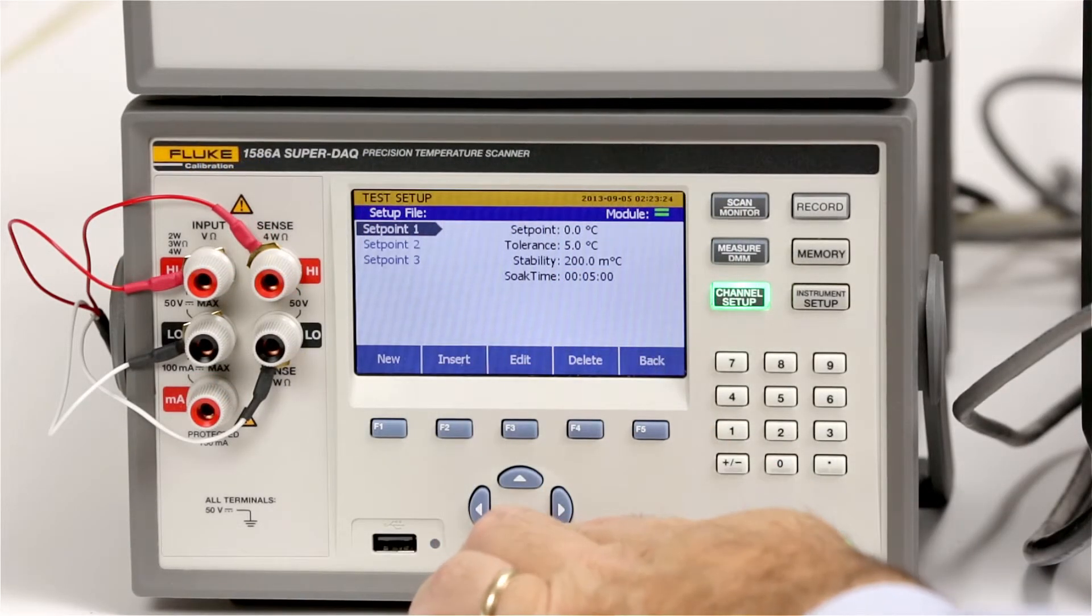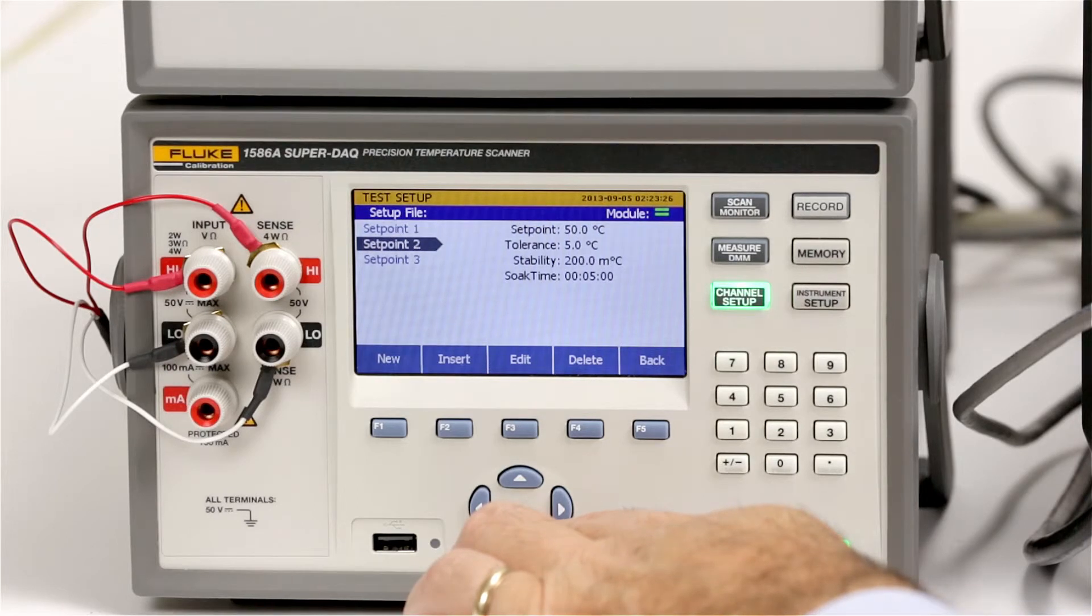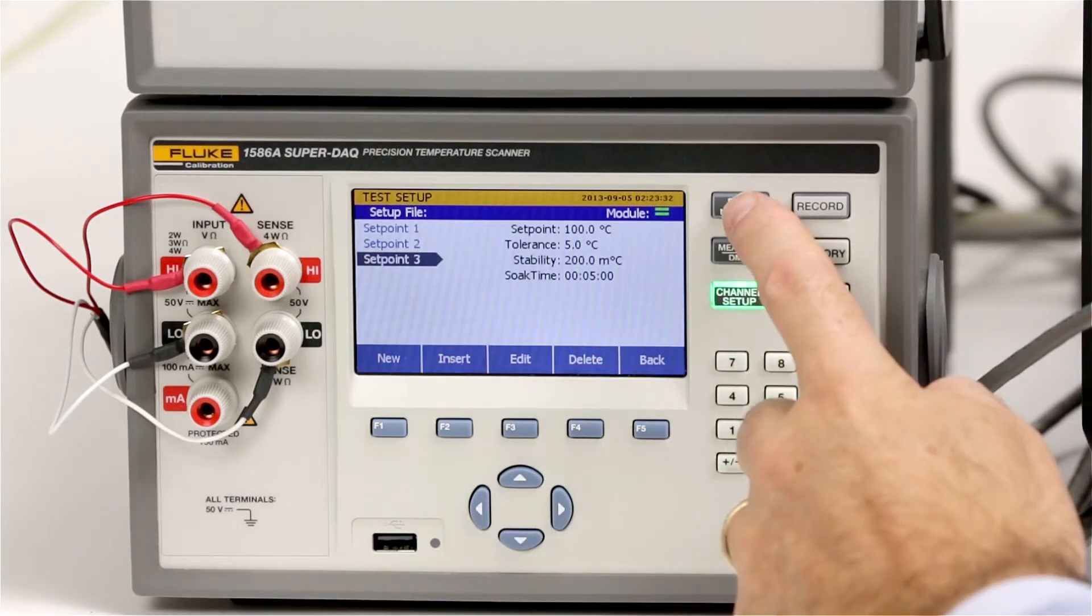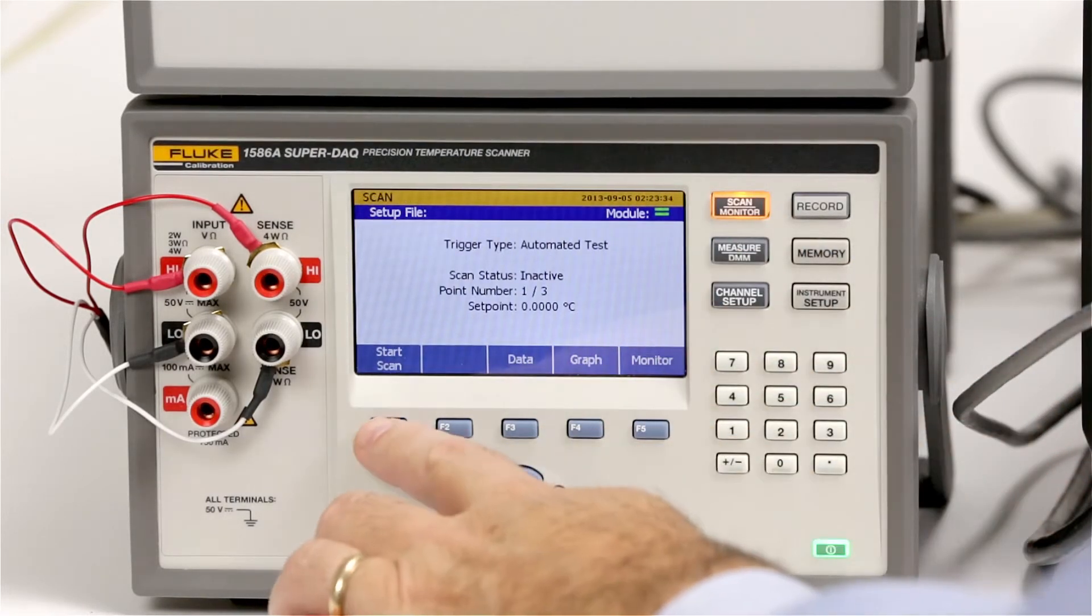Then we'll enter set points at 50 degrees C and 100 degrees C using the same tolerance, stability and soak time values. Press the scan monitor key and select start scan.